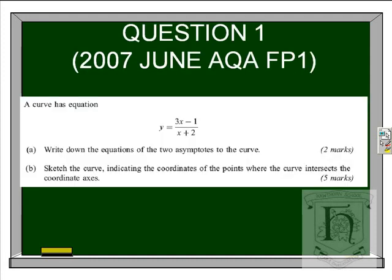If we look at a past paper question from AQA 2007, we have a curve with equation y equals 3x minus 1 over x plus 2. We are asked to write down the equations of the two asymptotes of the curve and then to sketch the curve indicating the coordinates of the point where the curve intersects the coordinate axes.